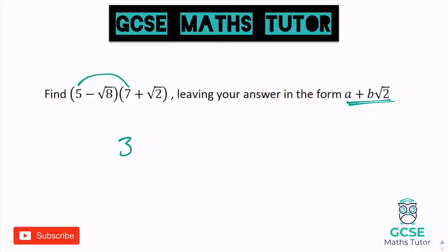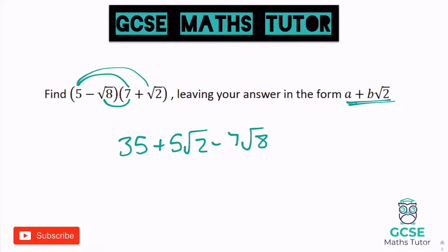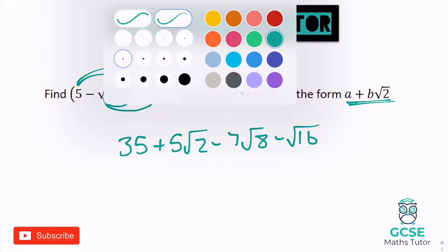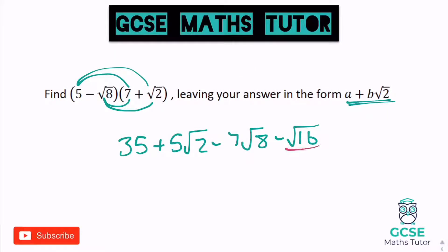5 times 7 is 35. 5 times root 2 is 5 root 2. Negative root 8 times 7 is negative 7 root 8. And negative root 8 times root 2 is negative root 16. Negative root 16 is negative 4, so we can write that straight away. The other bit that stands out is the 7 root 8 — this isn't a root 2, and we've seen before that root 8 does need to be simplified.